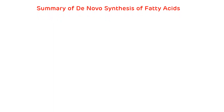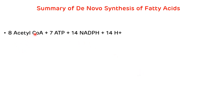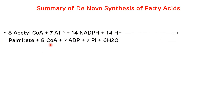In summary, for de novo fatty acid synthesis, the requirements for synthesis of palmitic acid (16 carbons) are: eight molecules of acetyl-CoA, seven molecules of ATP (used in the carboxylation reactions), and fourteen molecules of NADPH. The reaction also produces six molecules of H2O.